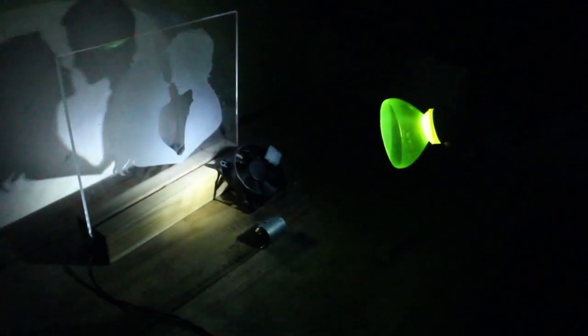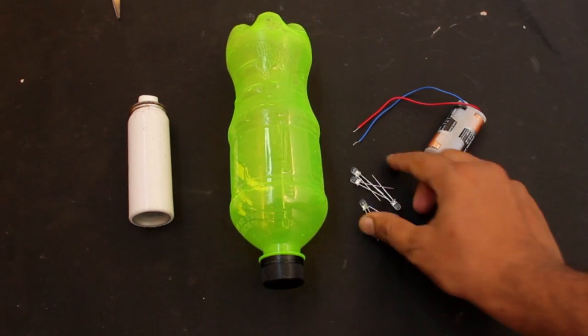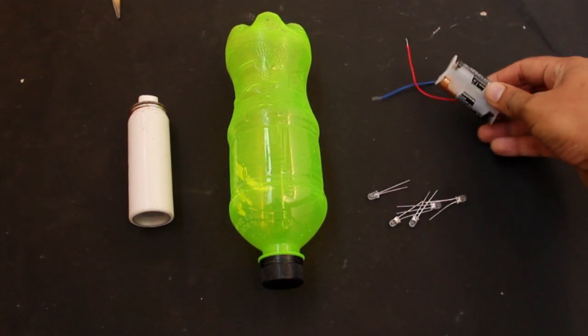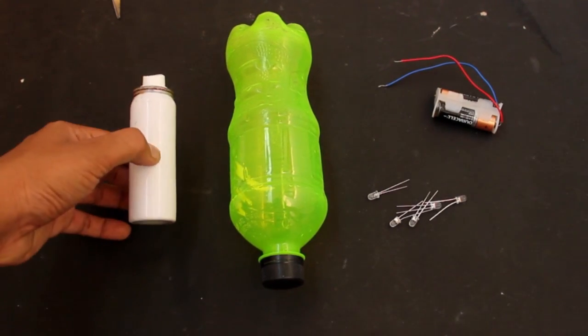Hey guys, today I'm gonna show you how to make a LED flashlight. For this project we need an empty plastic bottle, some LED lights, batteries, and an empty deodorant can.